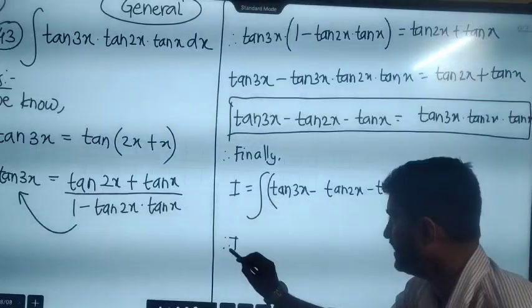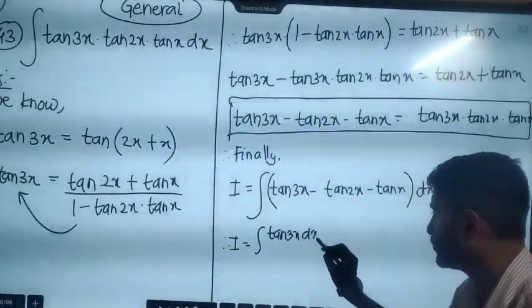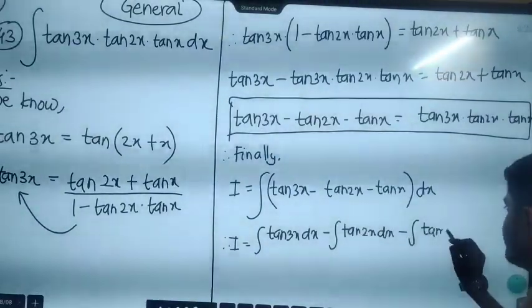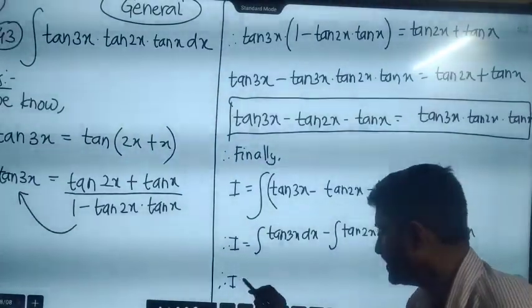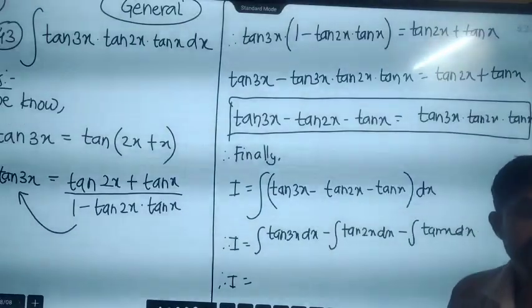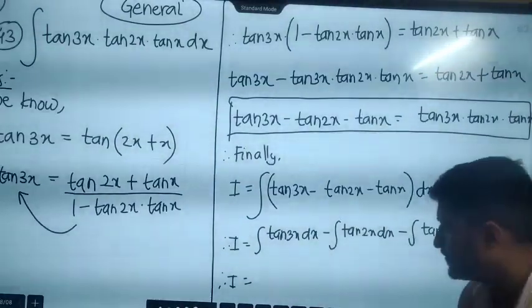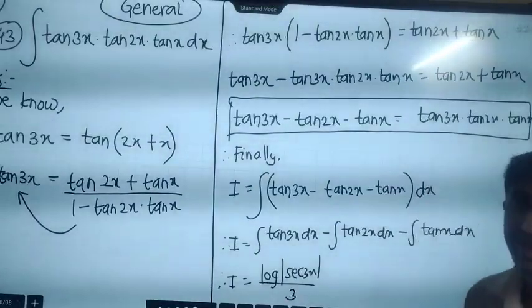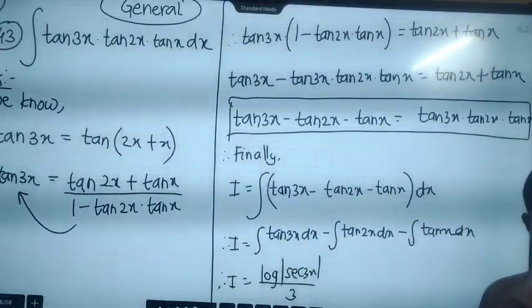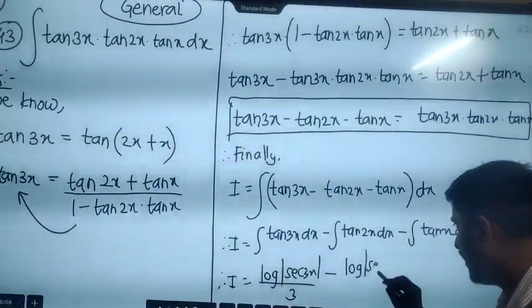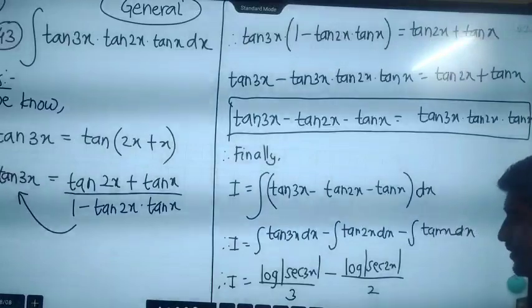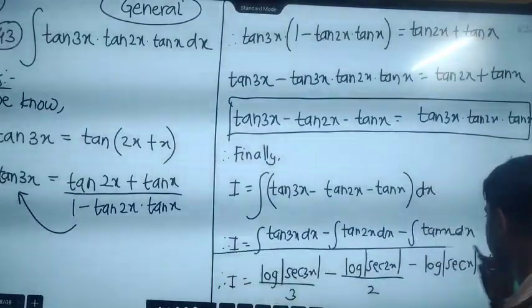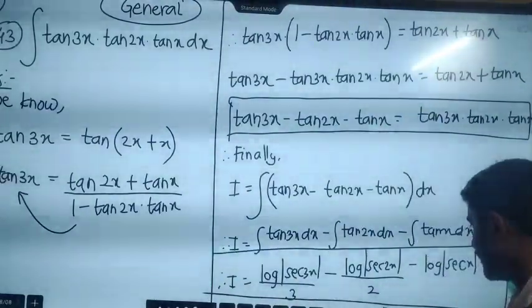I can now write the final answer. I equals integration of tan of 3x with respect to x, minus integration of tan of 2x with respect to x, minus integration of tan of x with respect to x. Therefore, the final answer is: log mod sec 3x upon 3, minus log mod sec 2x upon 2, minus log mod sec x, plus C. And this will be the required solution.